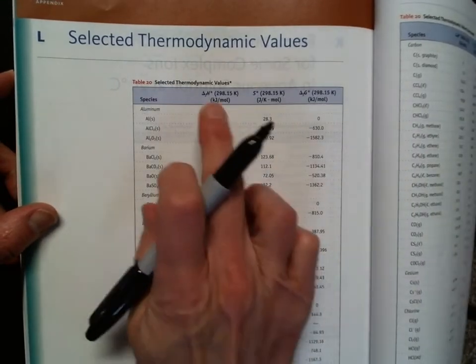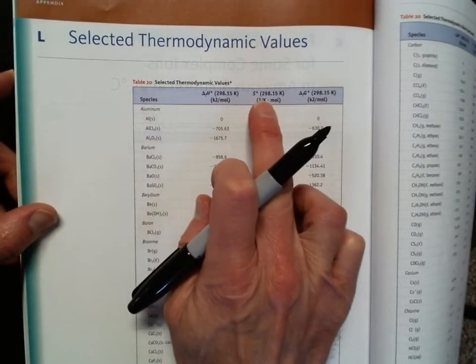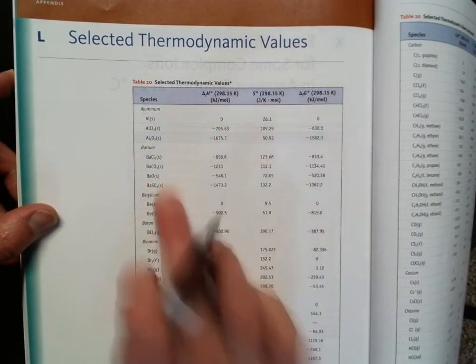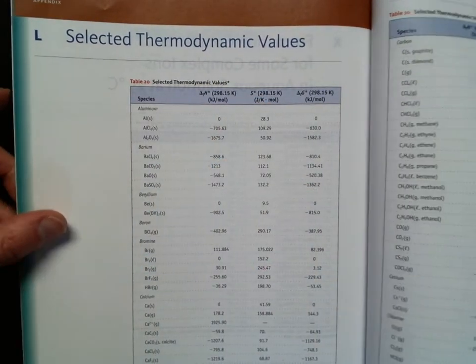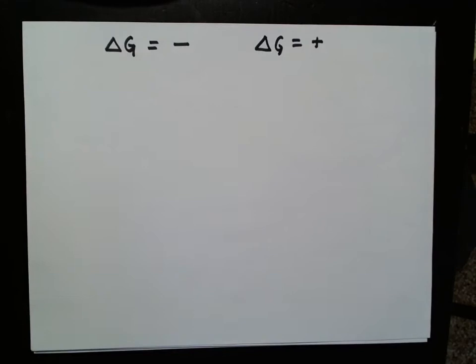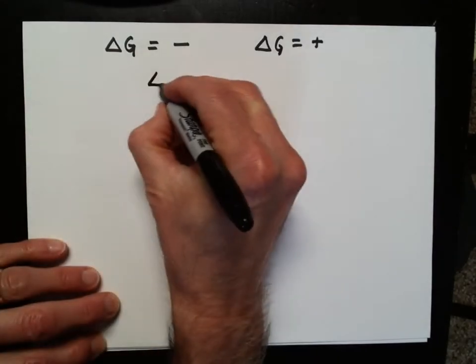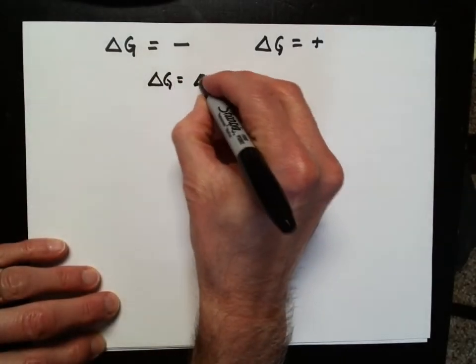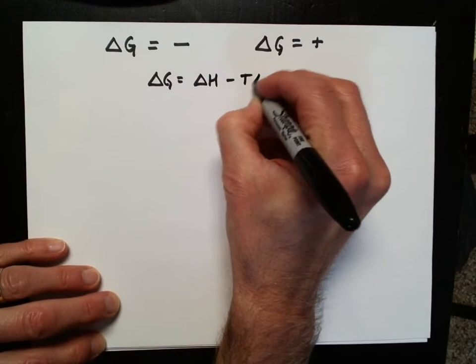We can also use values for the heats of formation and the entropies of various substances to figure out what Delta G is going to be based on the equation. Delta G is Delta H minus T Delta S.